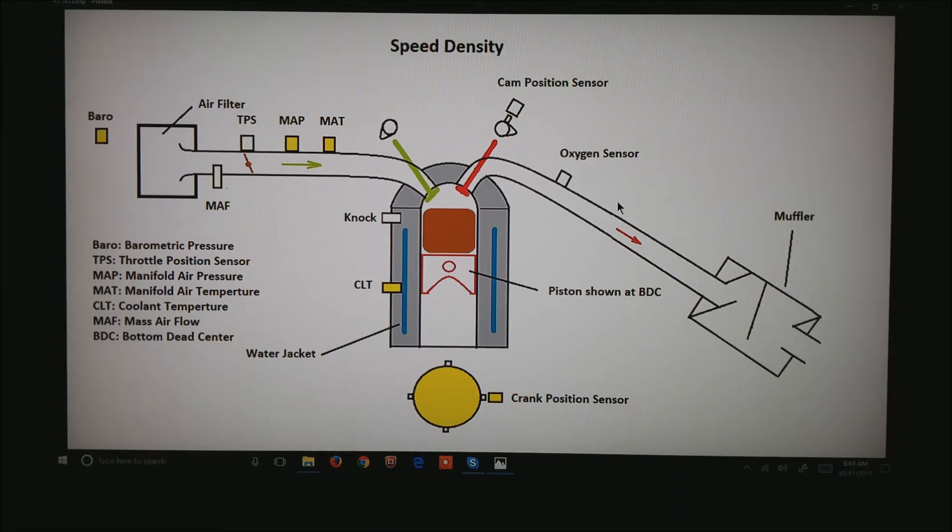The next method is speed density. Notice the TPS is no longer a critical sensor, often only used for acceleration enrichment and flood clear. The critical sensors are all in yellow.